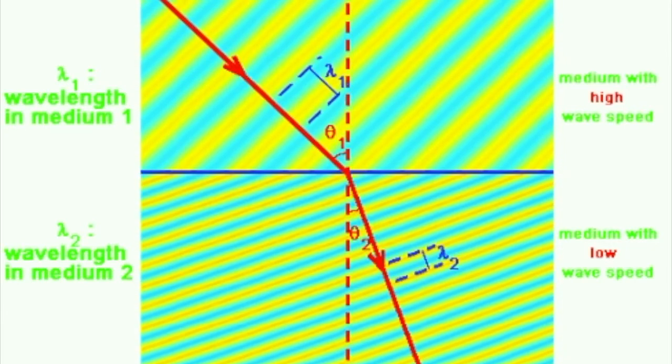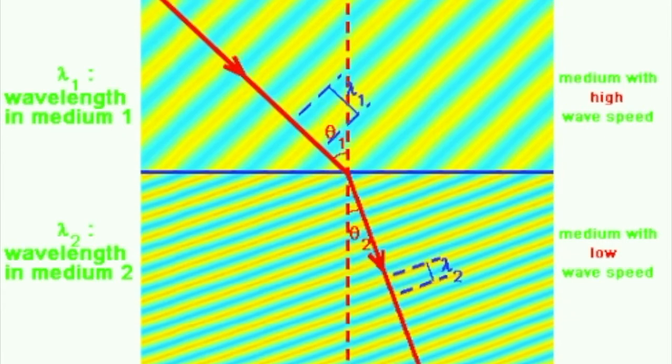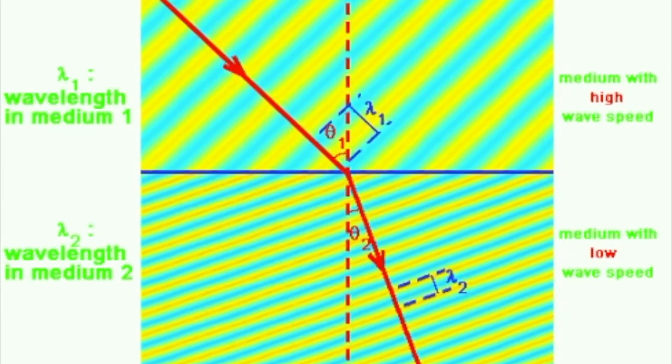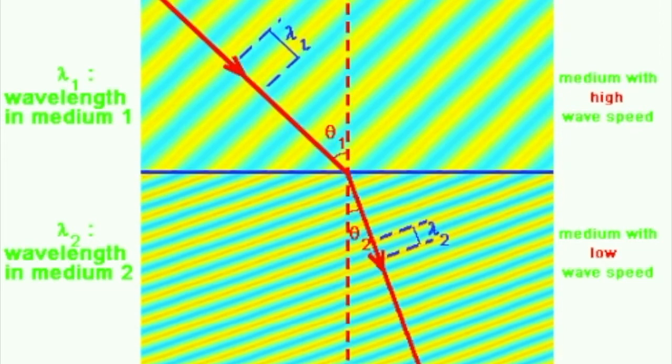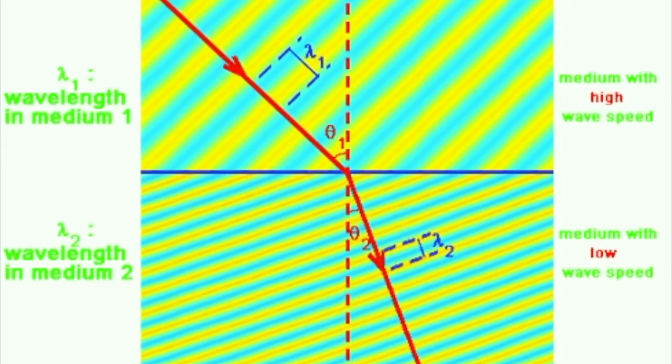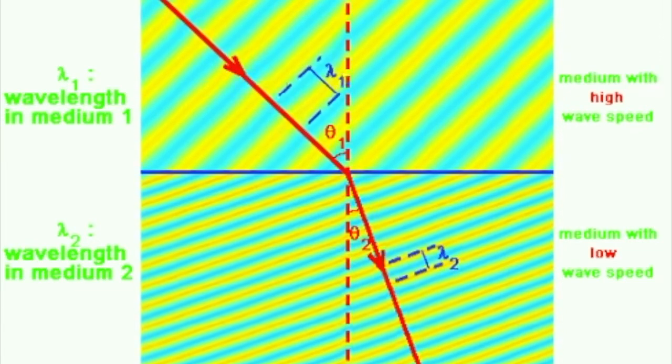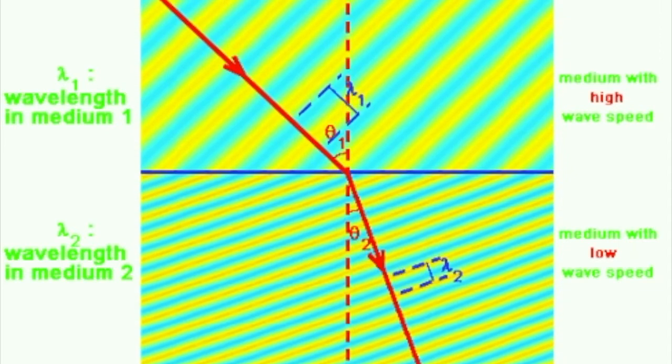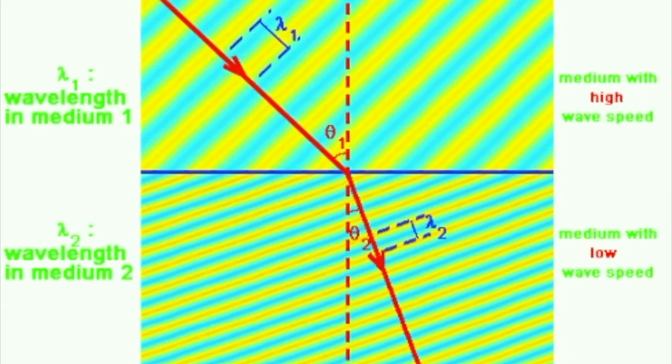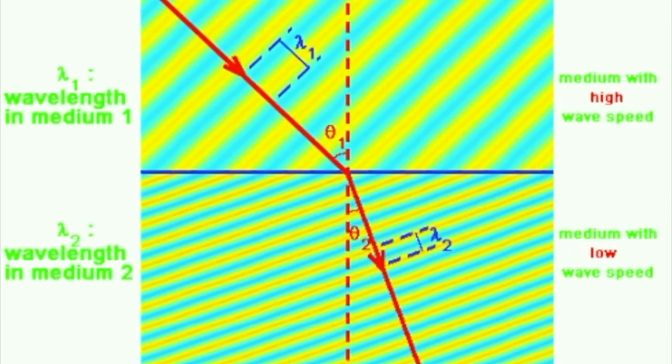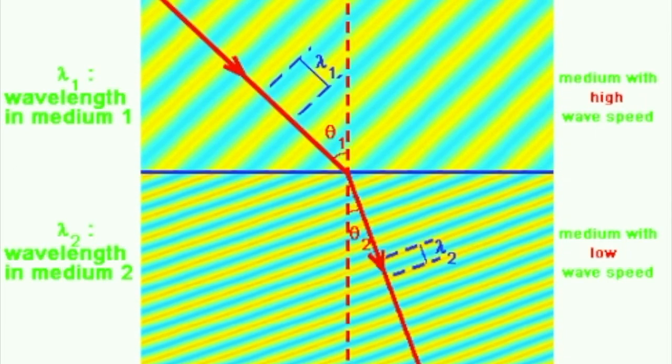We're not going to worry about the mathematical formula for that here. What's the point of this? Why do we care? Well, it turns out that refraction of light waves is very important for understanding how lenses work. In fact, lenses work entirely because of this refraction of waves. That's how a lens or a prism is able to change the direction of light that goes through it. It's because it's changing the speed.